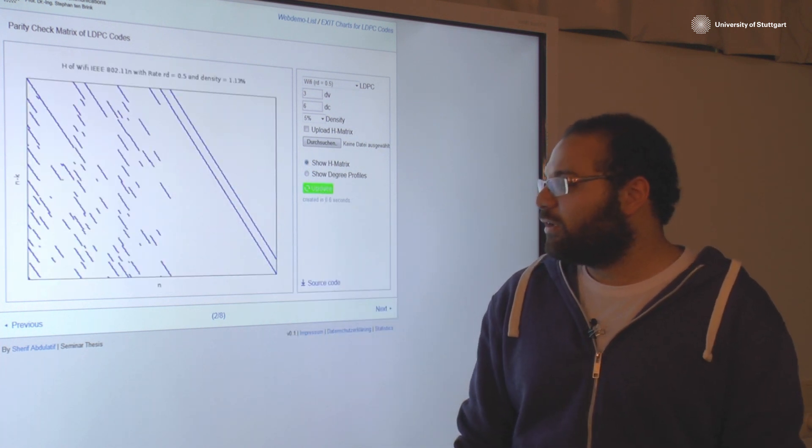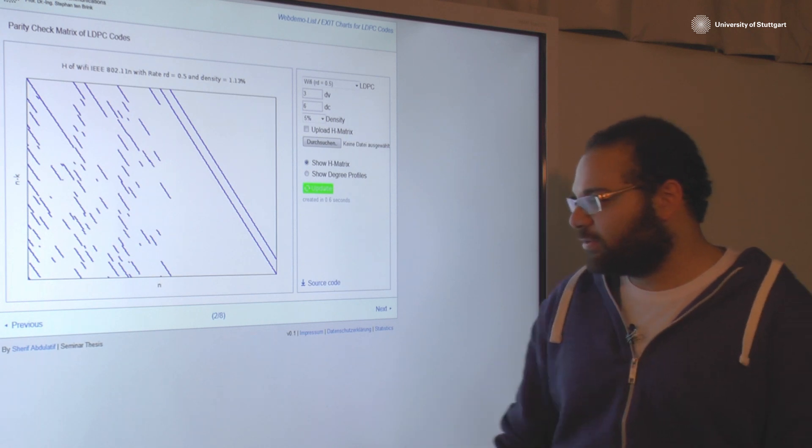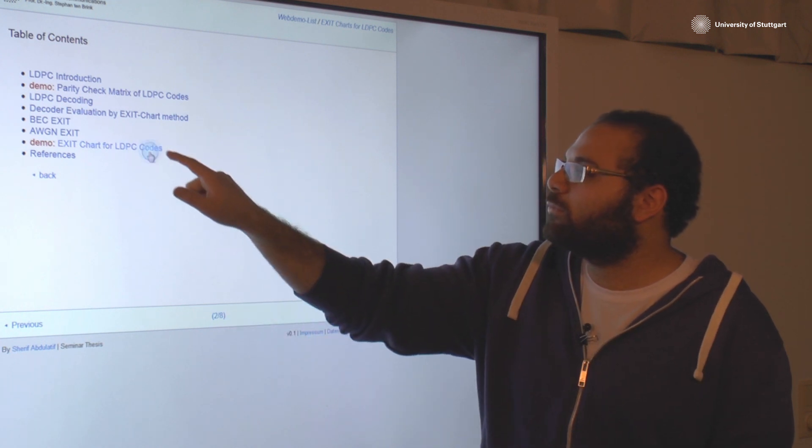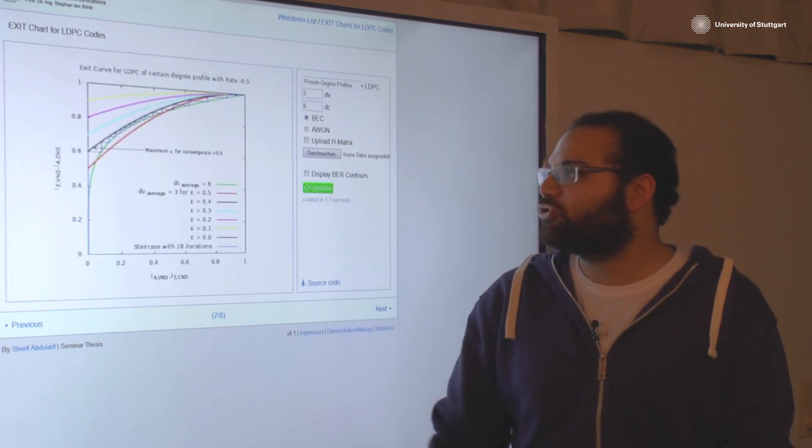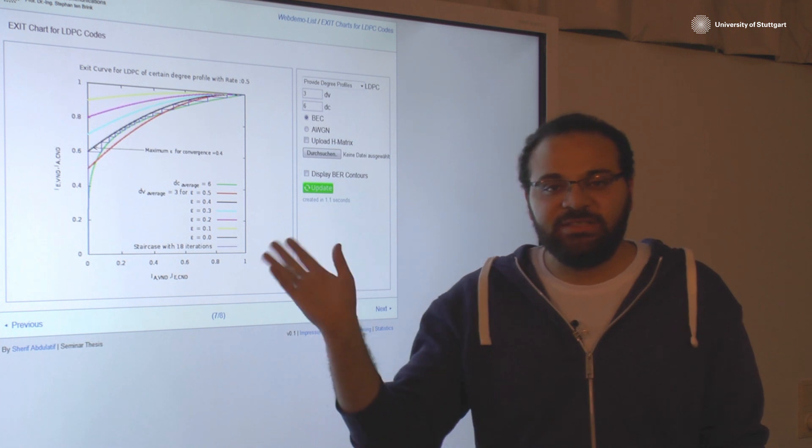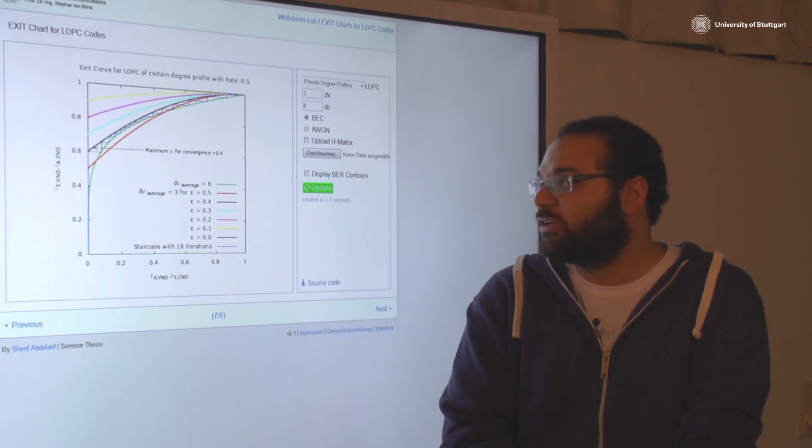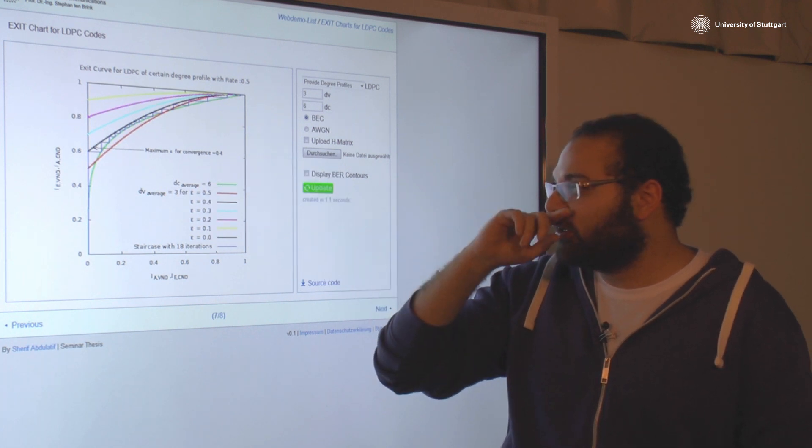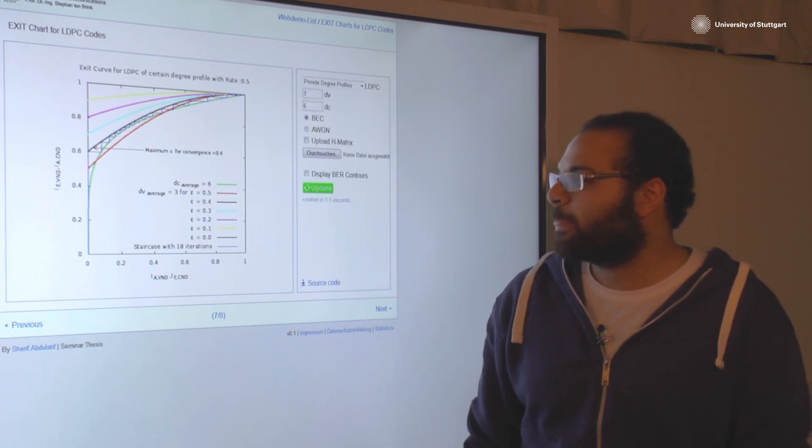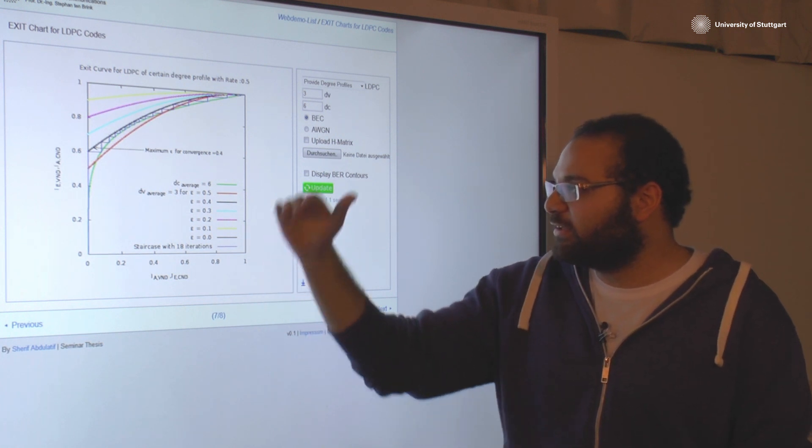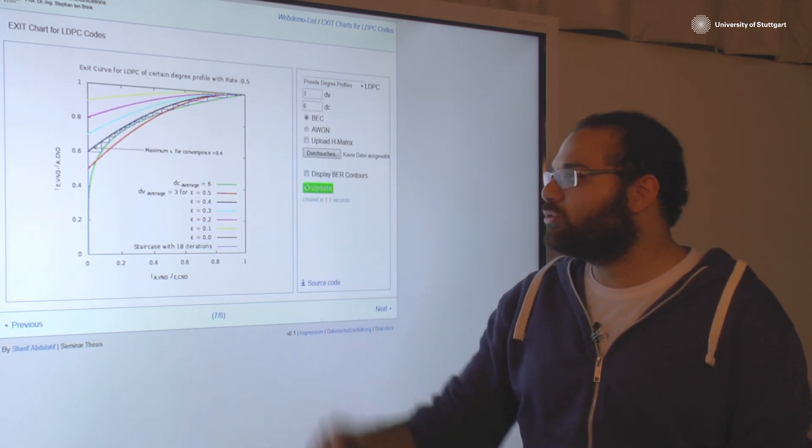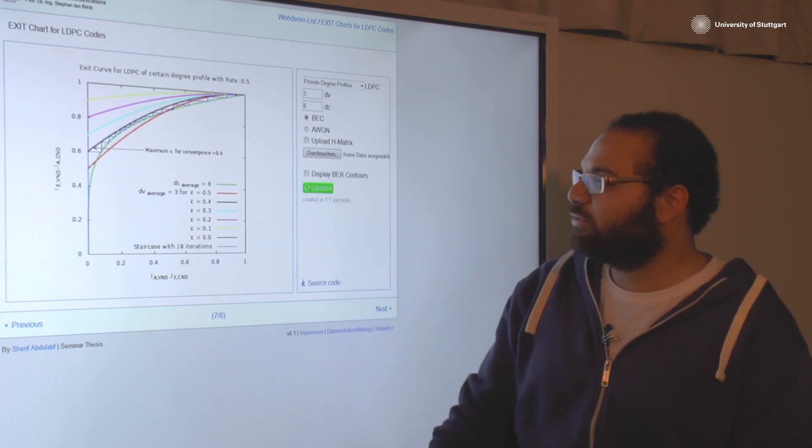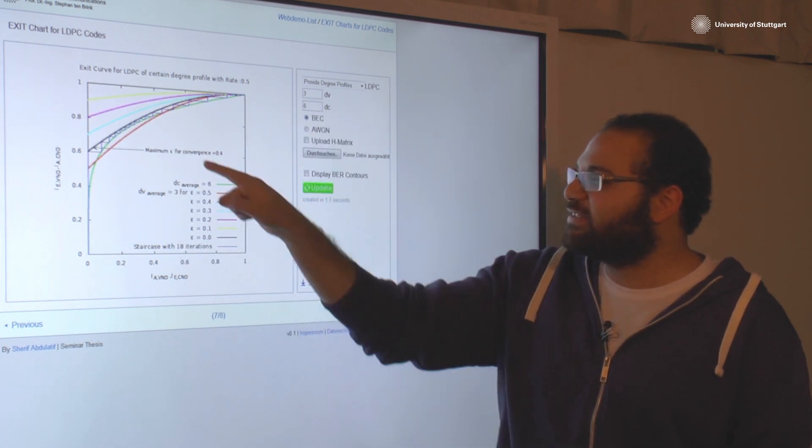Now for the second web demo slide. This is the main chart for us. Here we can see the main exit chart for LDPC codes. Here we can see the variable node degrees and the check node degree profiles. As the probability of erasure decreases, you can have a better behavior so the check node degree curves are higher. You can see the staircase here to show the convergence behavior at the maximum epsilon which gives you the convergence.